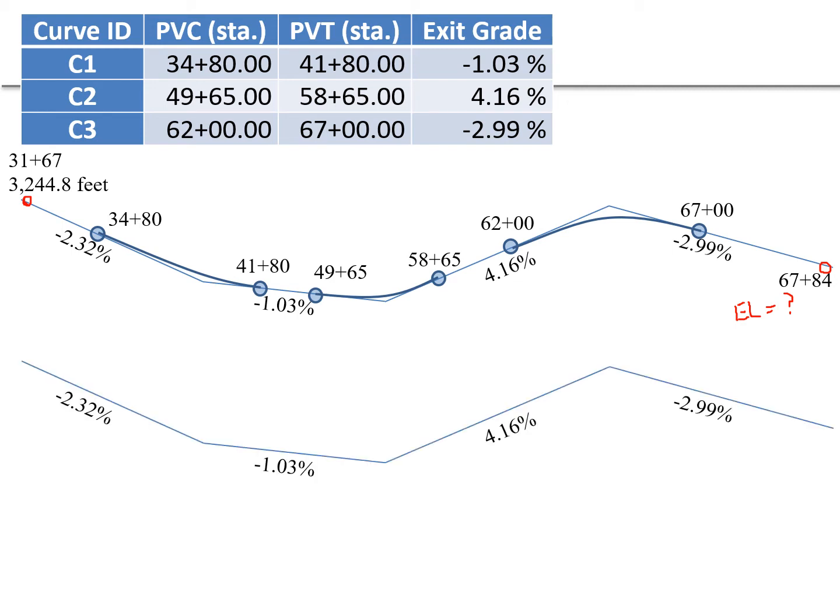There are multiple ways to work this problem. I'm going to approach it as a vertical alignment problem, so we don't have to actually follow the curvature of each individual curve. We're just moving from the beginning to the end and finding elevations of points on the tangent grades. We can establish elevations at the PVIs as we move along and bypass the curves, starting with our beginning elevation.